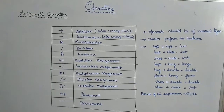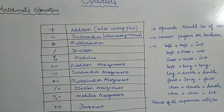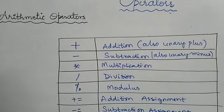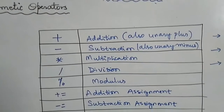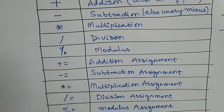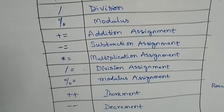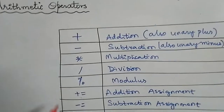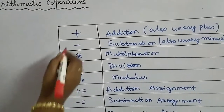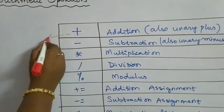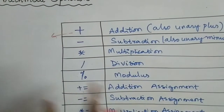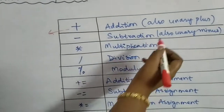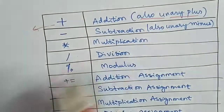There are 12 arithmetic operators. These arithmetic operators are used in mathematical expressions in the same way we use them in algebra — there is no difference. The plus operator, when used with two operands, becomes a binary operator, but it can also be used as a unary plus.